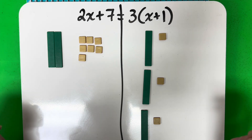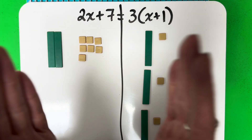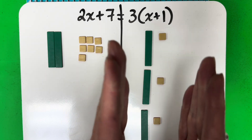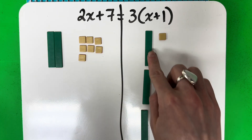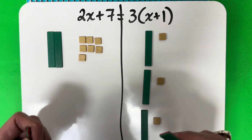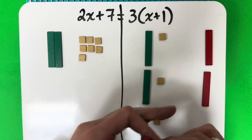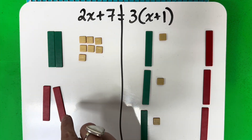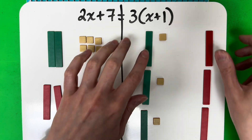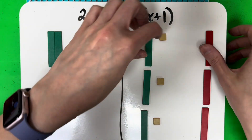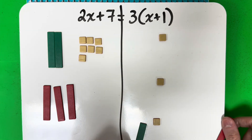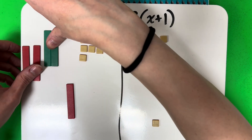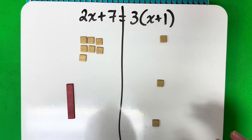Now we can continue. I want all of my rectangles on the left and all of my little squares on the right. So let's go ahead and move these rectangles — cancel them and move them to the left side. I have 3 greens or 3 positive, so I'm going to put 3 negatives or 3 reds. And whatever you do to one side you need to do to the other. So 3 reds here and 3 reds here. These cancel out — 3x minus 3x is 0, a zero pair.